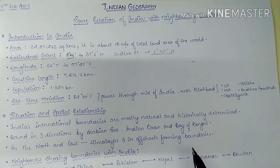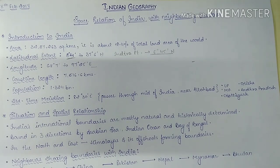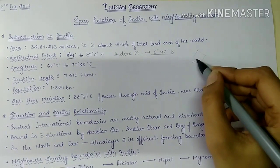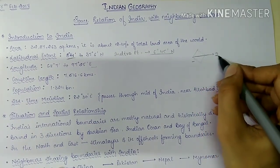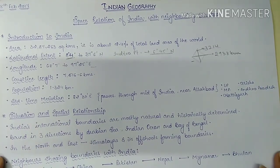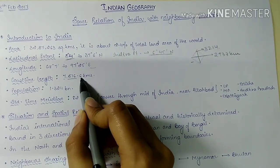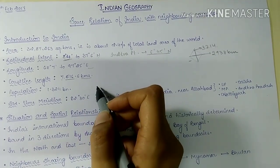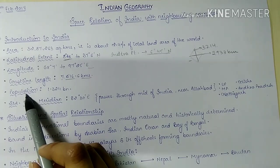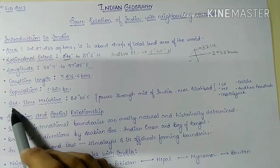From Kashmir to Kanyakumari, if we calculate the extent it is 3,214 kilometers, while from east to west — from Rann of Kutch to Arunachal Pradesh — it is 2,933 kilometers. So it is quite equidistant in shape. The coastline length including the islands is 7,516.6 kilometers.